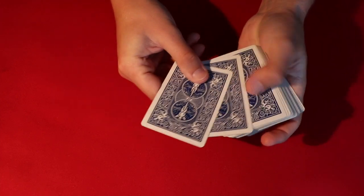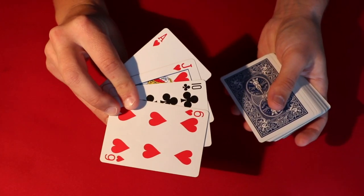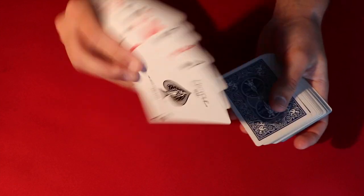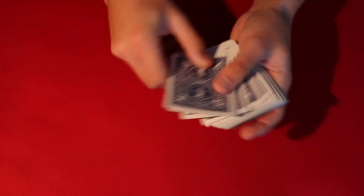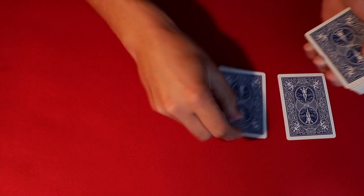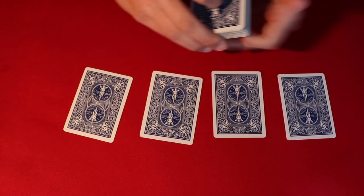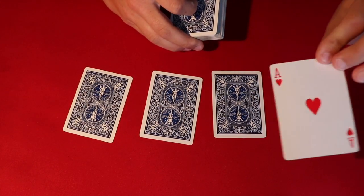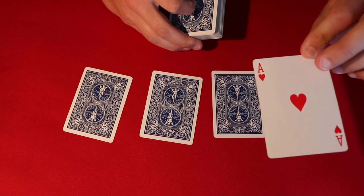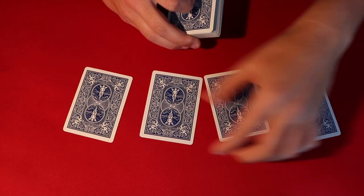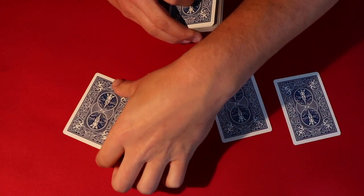So from here your setup should be one ace on top, three random cards, and then the other three aces below that. Now at this point you just deal the cards down and starting from left to right, just bear in mind which card you place down first. In this case it's the ace of hearts. These other three cards are the three random cards.